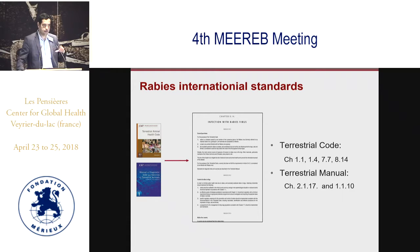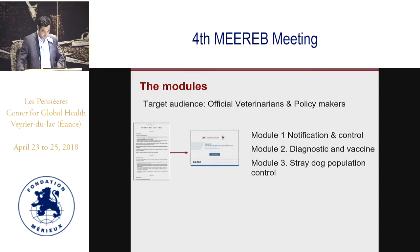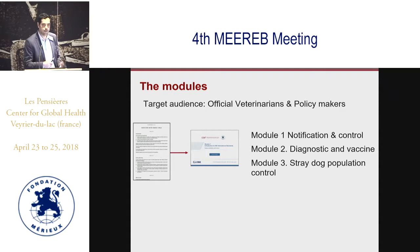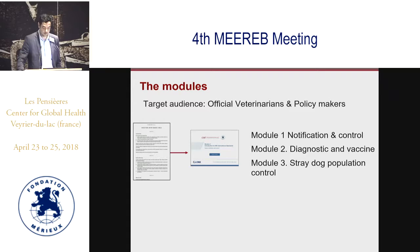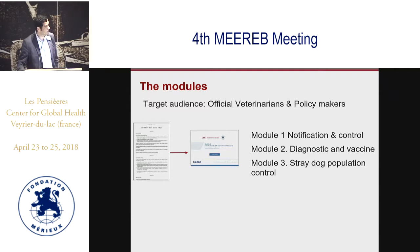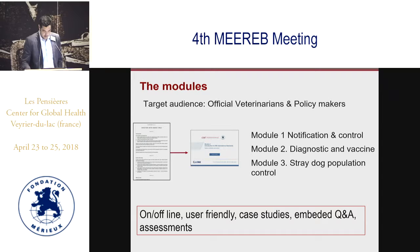The idea was to combine all these standards into three nice modules, in a way that is much easier to understand and more attractive to go through. With thanks to the IT people at Fundación Merio, we basically digested the international standard for end users. We came out with three modules: Module 1 covers notification and disease control, Module 2 is dedicated to diagnostics and vaccines including vaccine banks, and Module 3 covers trade and dog population control.